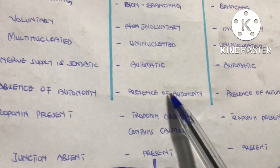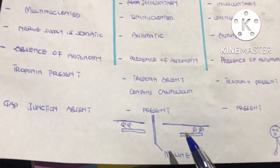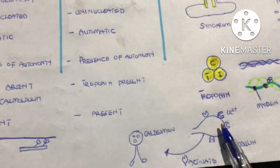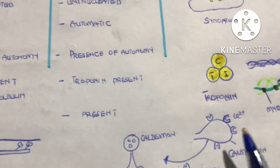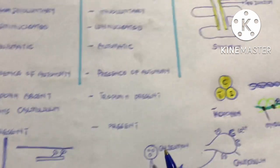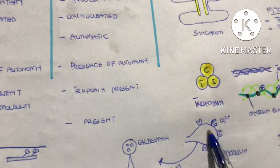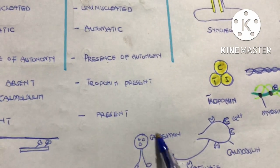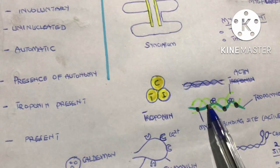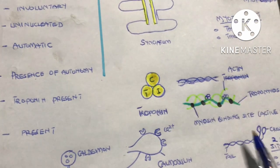In smooth muscle there is no troponin, but it contains calmodulin, which acts like troponin. Calmodulin binds four calcium ions, and the calcium-calmodulin complex activates a structure called caldesmon. Caldesmon is bound to tropomyosin, and when activated, it undergoes a conformational change causing tropomyosin to also undergo a conformational change, thereby exposing the myosin binding sites.